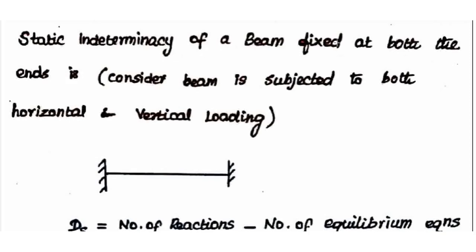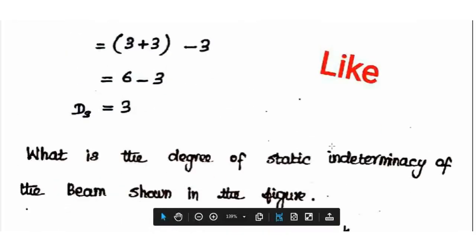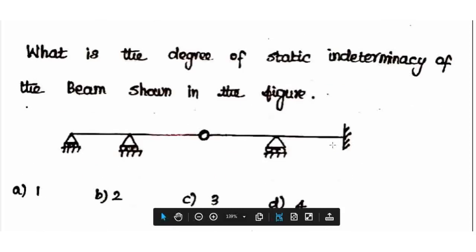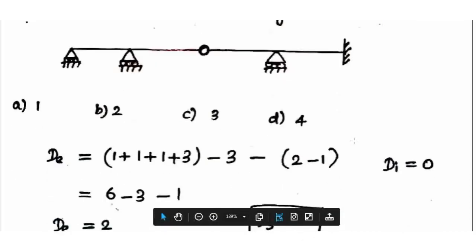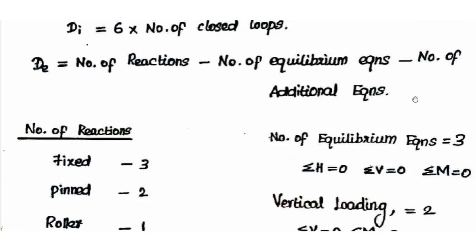Next example: static indeterminacy of a propped cantilever beam. There are two cases: Case 1 — beam subjected to horizontal and vertical loading; Case 2 — beam subjected to vertical loading only. For the propped cantilever, we apply the formula: degree of static indeterminacy = number of reactions minus number of equilibrium equations minus number of additional equations.